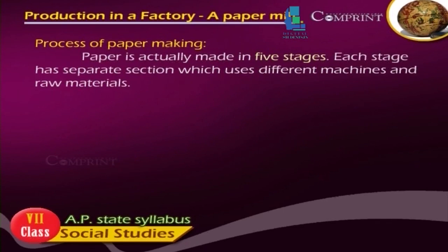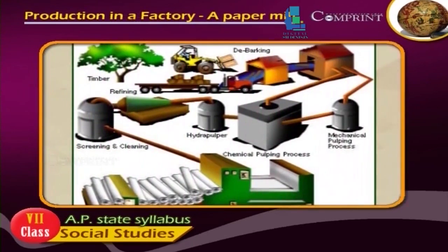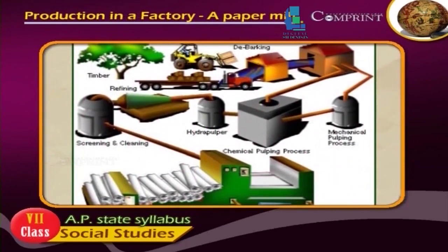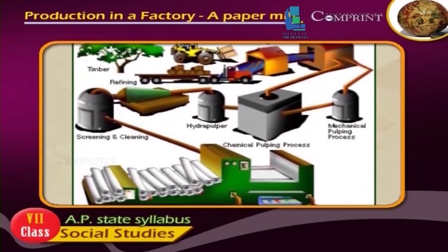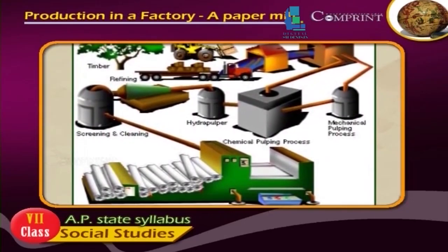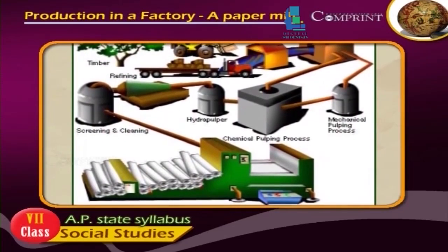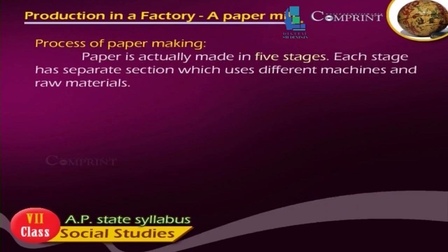Process of paper making: Paper is actually made in five stages. Each stage has a separate section which uses different machines and raw materials.